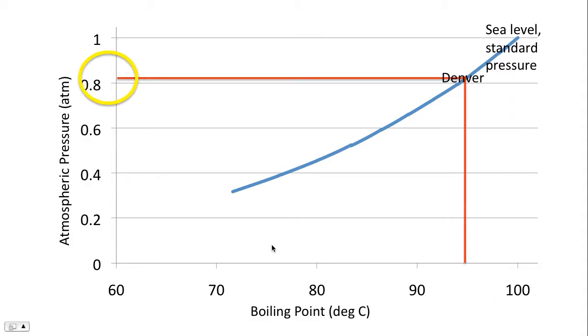However, in certain parts of the world which have higher elevations, they have lower atmospheric pressure. For example, in Denver. Looking at the atmospheric pressure, it's significantly lower than that at sea level. And notice that water will boil at a lower temperature if you live in Denver.